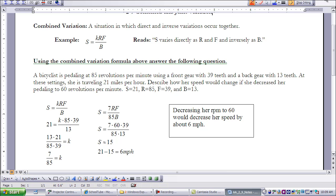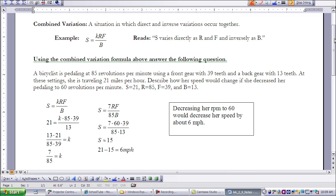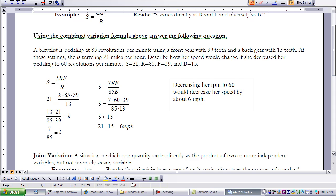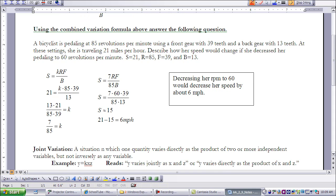So I have an example for you here. It's about a bicycle. Here we have a bicyclist pedaling at 85 revolutions per minute using a front gear with 39 teeth and a back gear with 13 teeth. At these settings, she's traveling 21 miles per hour. Describe how her speed would change if she decreased her pedaling to 60 revolutions per minute.